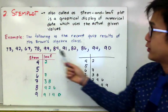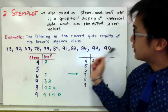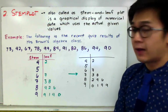These are the scores of her students, so we have 73, 42, 67, and so on, which is basically the list of scores of her algebra class.